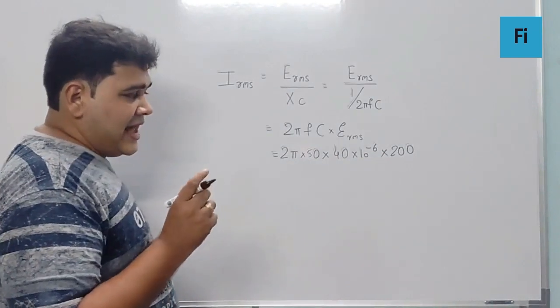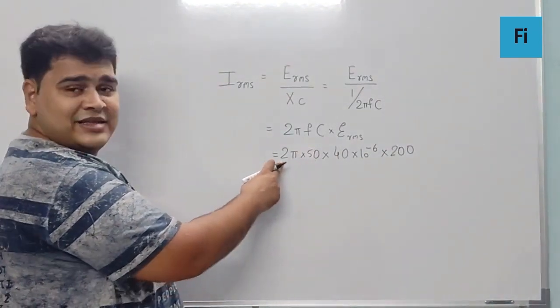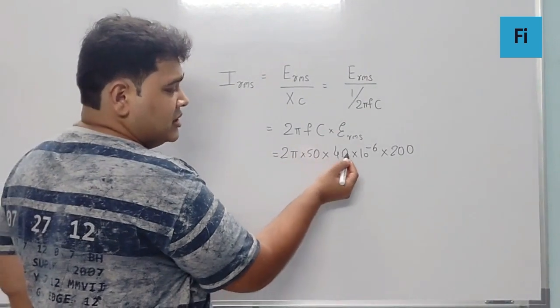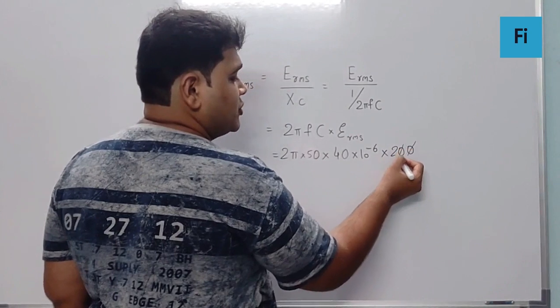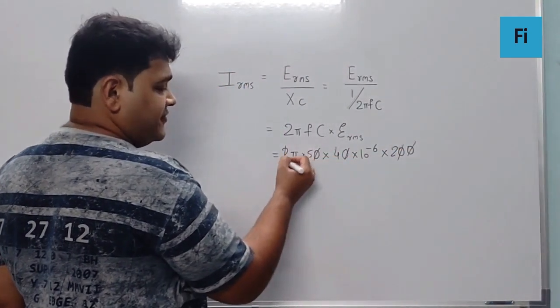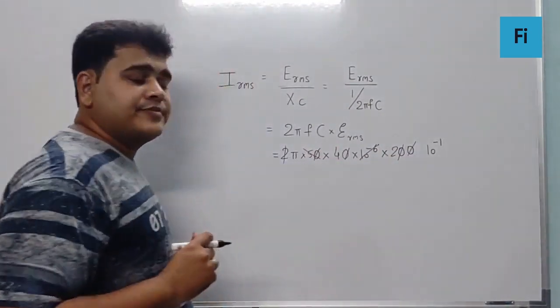So now if I just take the zeros into consideration, 50 into 2 is 100, that is 10 raise to 2. This zero will be 10 raise to 3. This 4 and 5, so 1, 2, 3, 4 and 5 overall. This makes it 10 raise to minus 1.